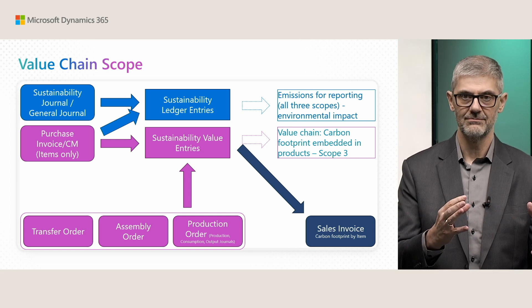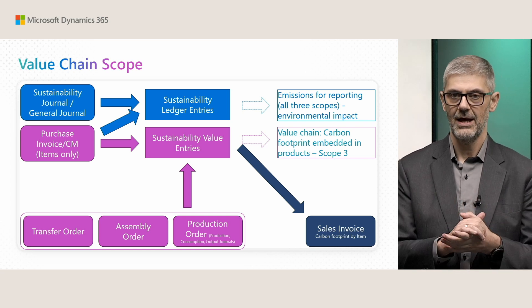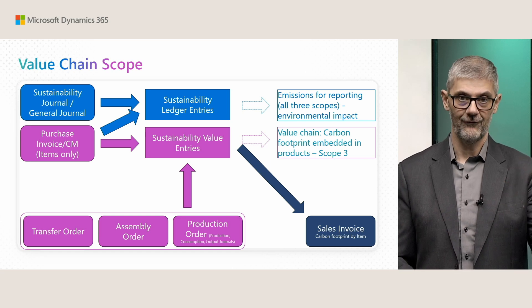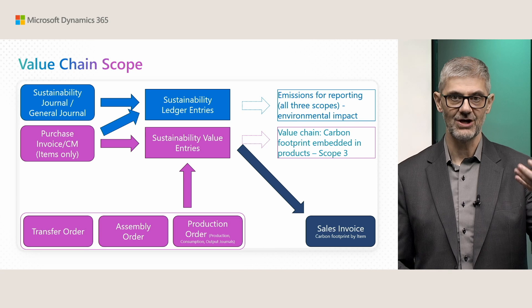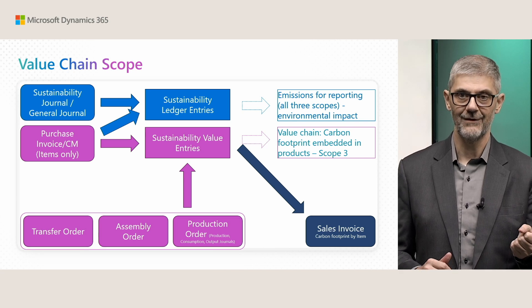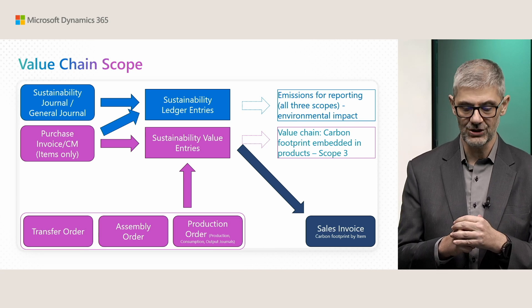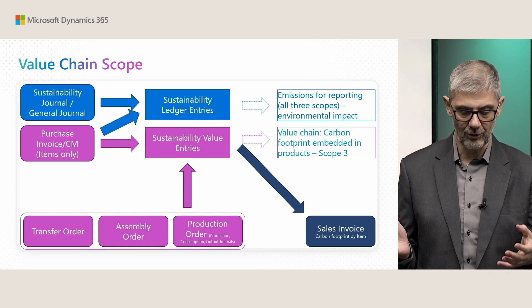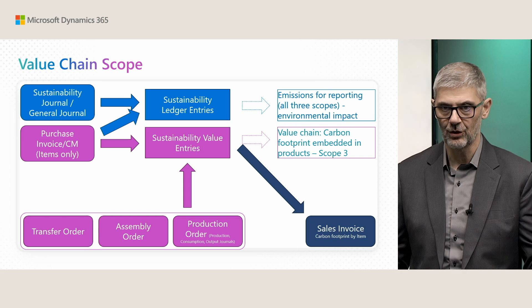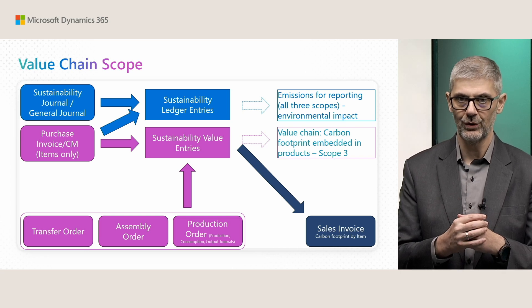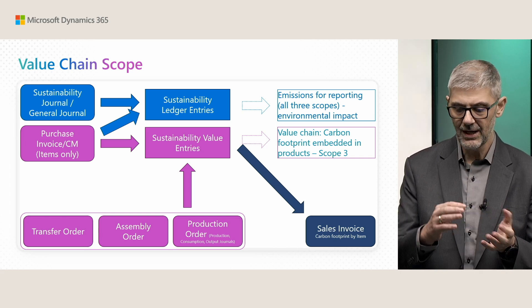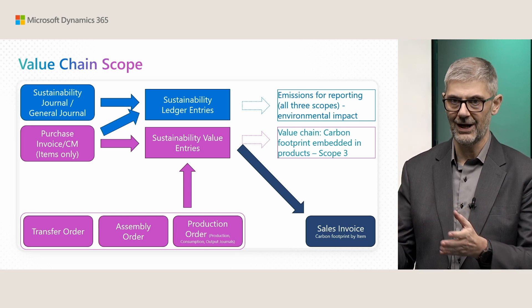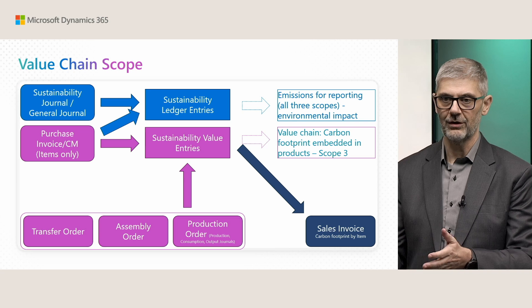Everything starts with purchase documents. You will get the first incoming emissions from purchase documents — in this Wave only for items, so item charges cannot be applied in this Wave; that is something we are planning for the future. Then all these different internal documents — transfer order, assembly order, production order — can have an impact on what you are doing to your sustainability value entries.